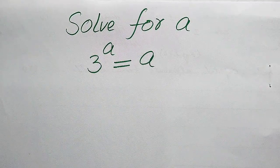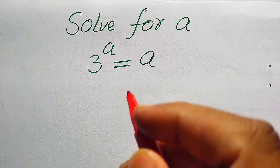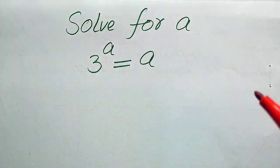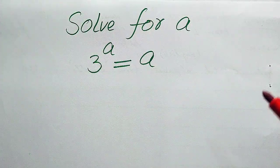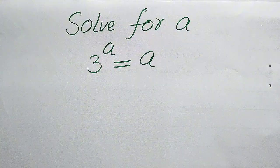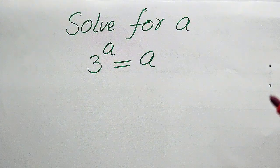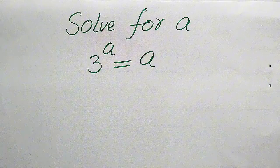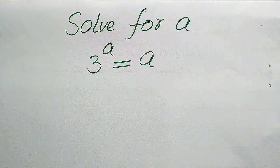Hello everyone. How to solve this problem: for the values of a, if we have 3 to the power of a equals a, and we solve this for all the values of a. This is a very nice math exponential equation problem. If you have any other method in mind, please don't hesitate to write it into the comment section.